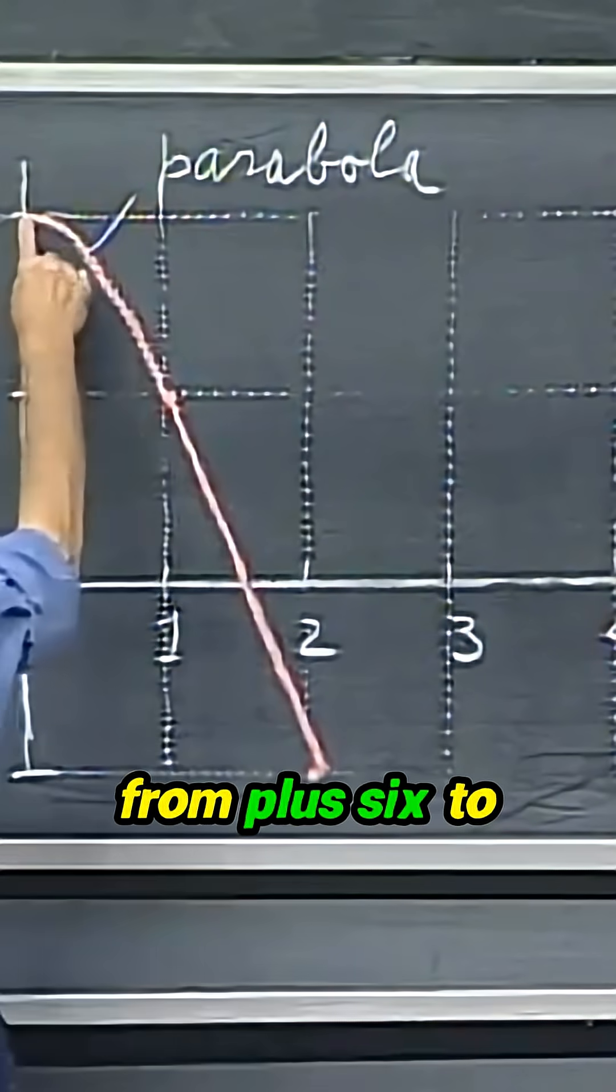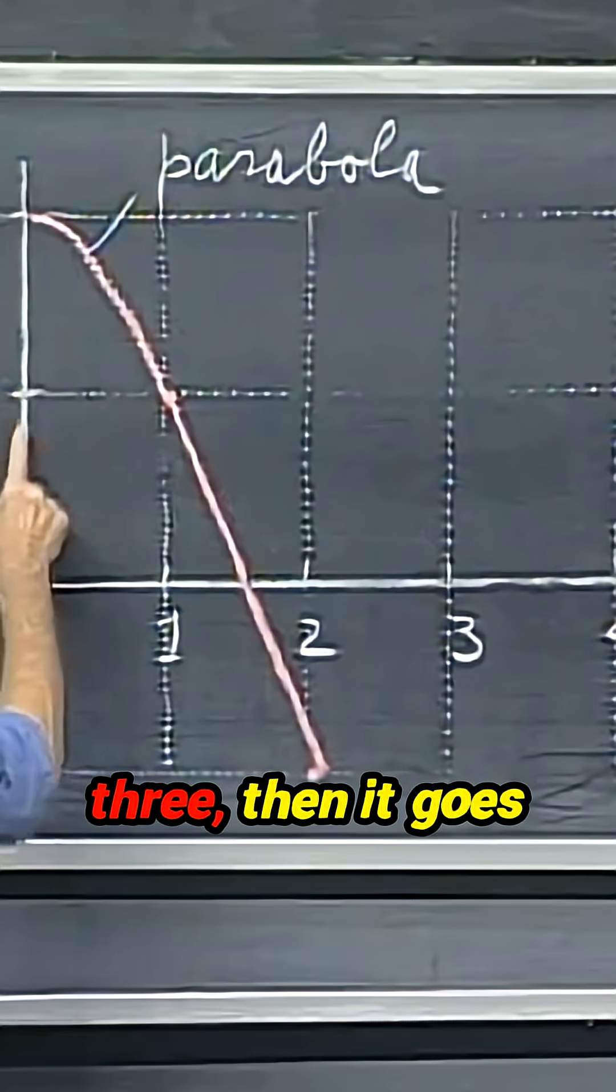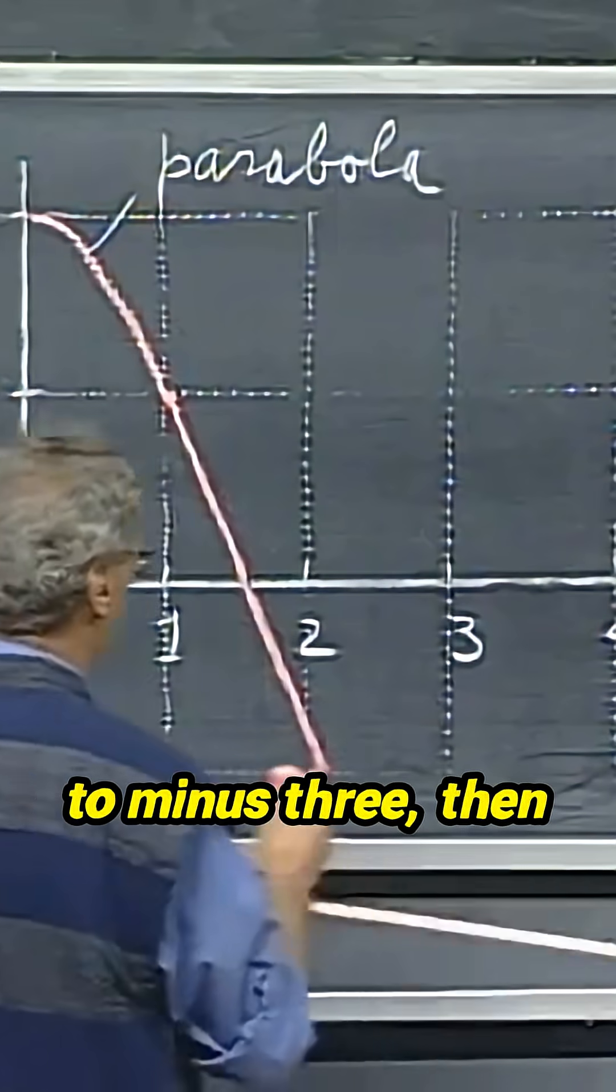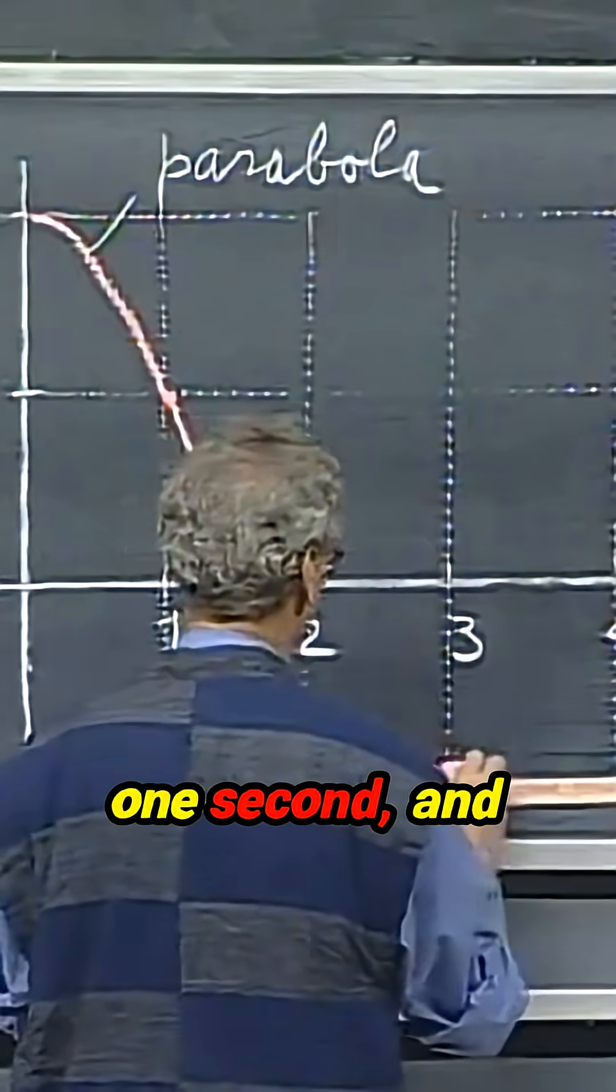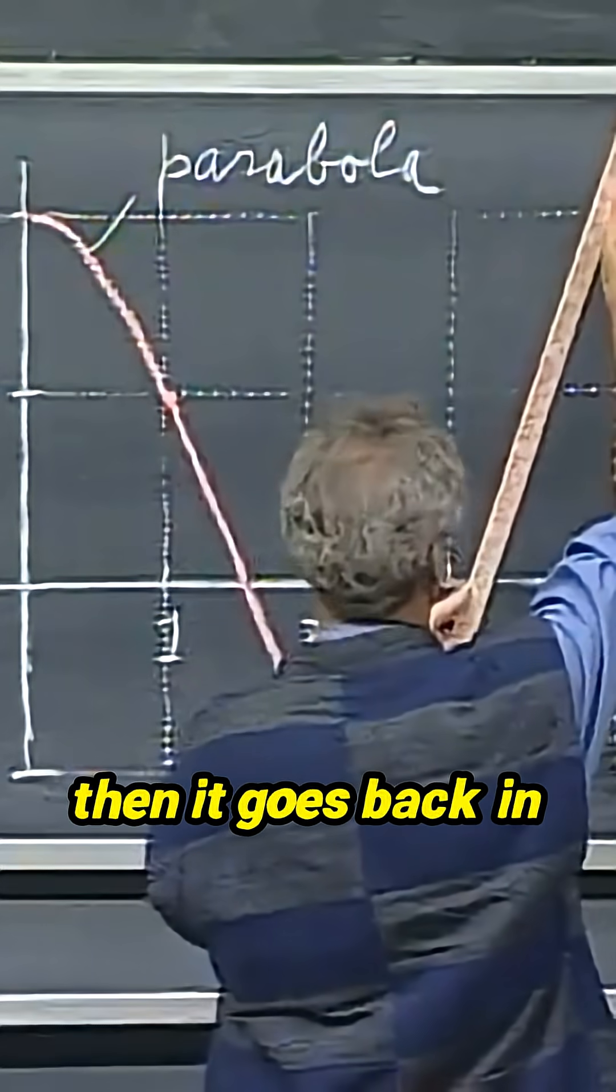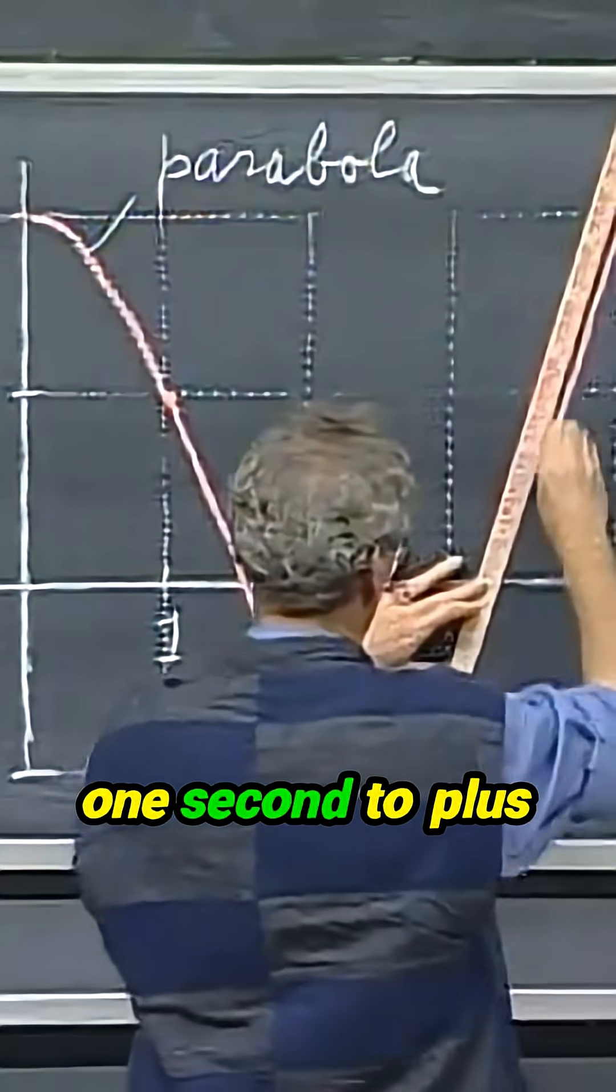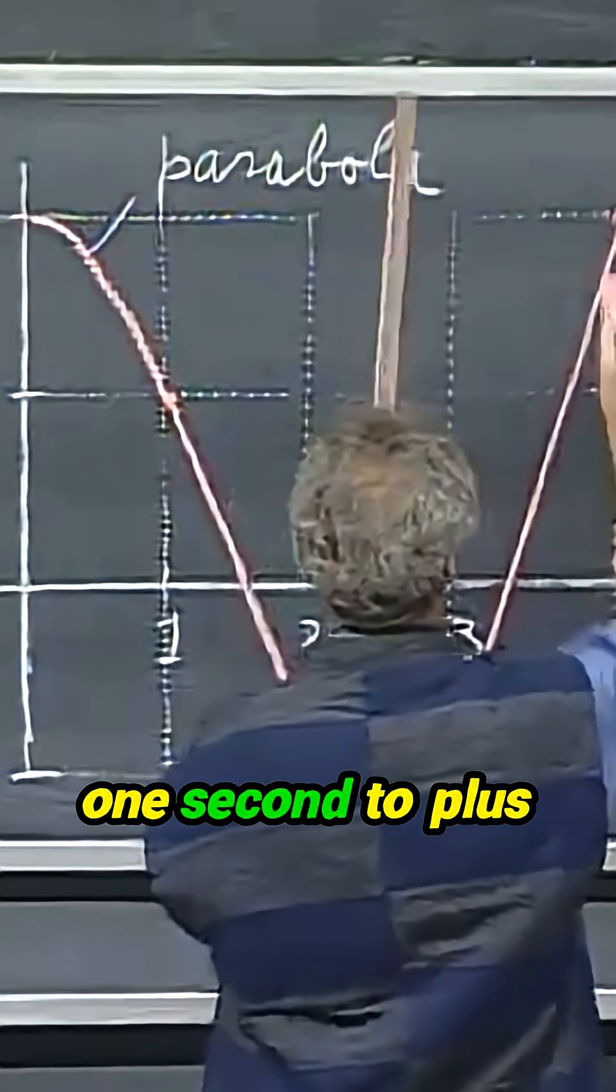So the object goes from plus six to three, then it goes to minus three, then it stays there for one second, and then it goes back in one second to plus six.